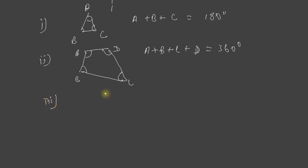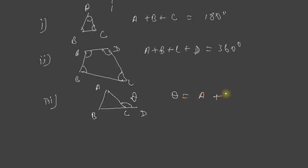The third point: in a triangle ABC, if we extend one of the lines BC up to D, then this angle is called the exterior angle of the triangle. In such a case, this exterior angle theta is equal to the sum of the two opposite interior angles. So these are the three facts we will use: angle sum of a triangle is 180 degrees, quadrilateral is 360 degrees, and the exterior angle equals the sum of the two opposite interior angles.